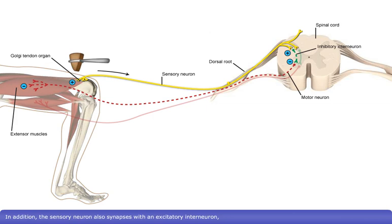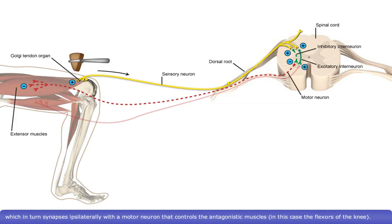In addition, the sensory neuron also synapses with an excitatory interneuron, which, in turn, synapses ipsilaterally with a motor neuron that controls the antagonistic muscles, in this case, the flexors of the knee.